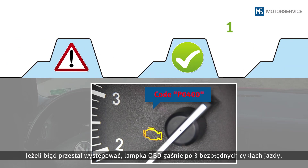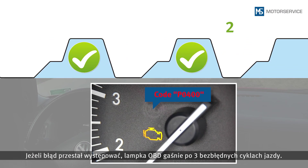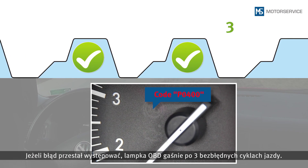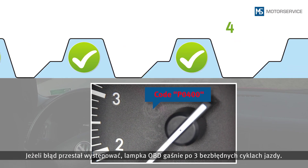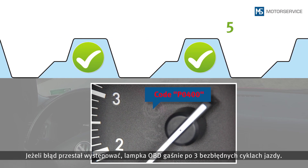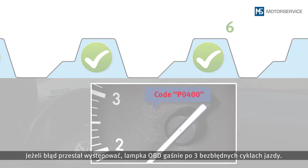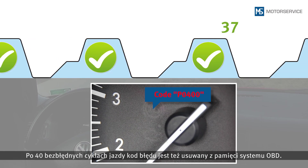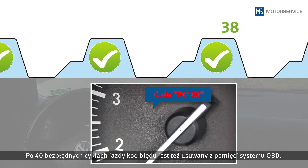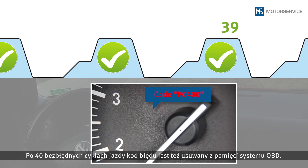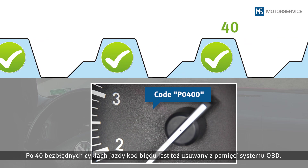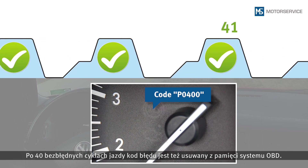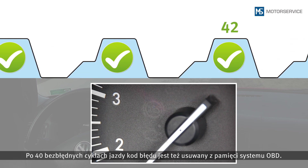If an error does not occur again, the malfunction indicator lamp will go out after three faultless driving cycles. After 40 faultless driving cycles, the DTC is also deleted from the OBD memory.